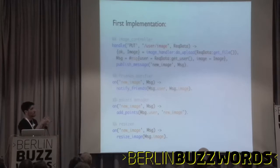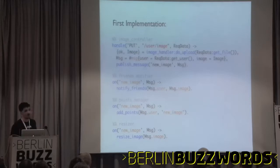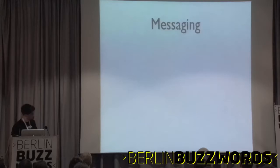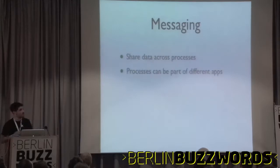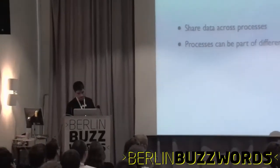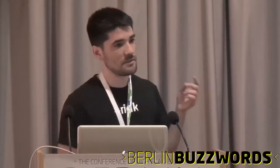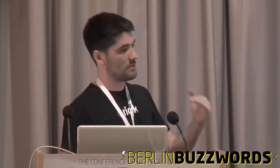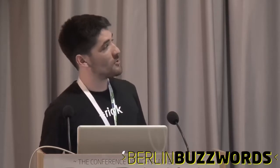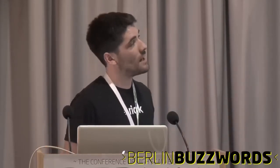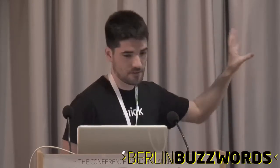If we think about architecture with this kind of pattern, then what happens on the other end of the network, we actually don't care. It may be us implementing all the other logic, or it can be a team somewhere else. So, what is messaging? We use messaging to share data across processes. Processes can be part of different applications, so we don't have only communication inside our application — we can make applications talk together. The applications can live in different machines, and the communication is asynchronous. This is something really important.